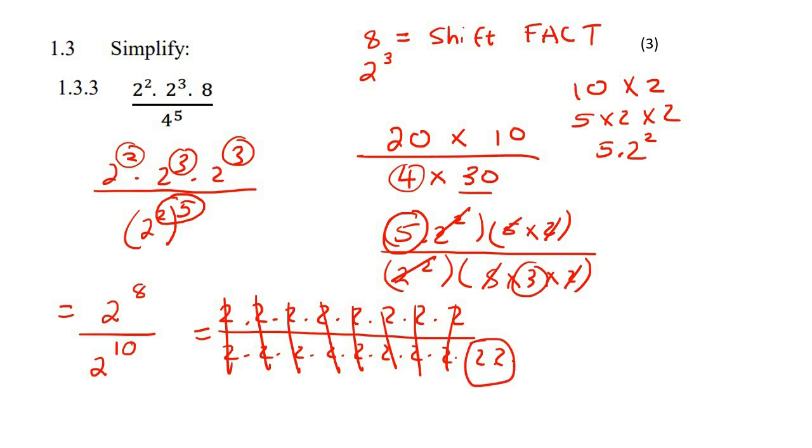And then you would still have these at the bottom. So your answer would then be one over two to the power of two, because there's two of them. And then you could write that as one over two to the power of two is four.